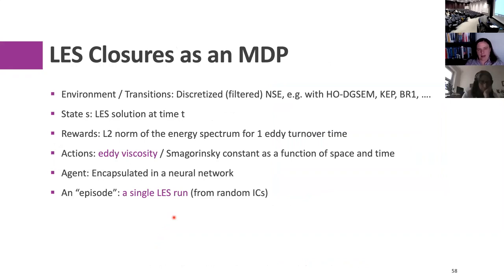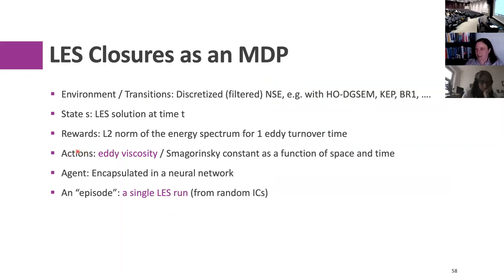Let's frame finding LES closures as a Markov decision process. The environment is my discretized Navier-Stokes equation — my high-order DG solver with kinetic energy schemes, Riemann solvers, whatever. It could be your favorite finite volume WENO reconstruction, whatever. The state is my LES solution at a given time. A reward could be: for homogeneous isotropic turbulence, do I fit my energy spectrum? An action could be selecting an eddy viscosity or Smagorinsky constant as a function of space and time. An episode is a single LES run.